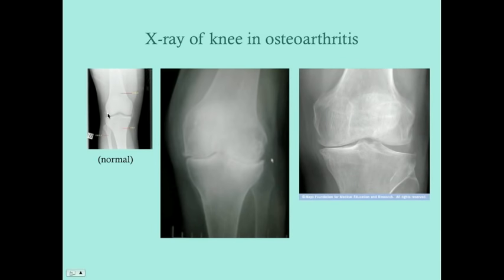On the distal interphalangeals, there is definite narrowing of the joint space on X-ray. Looking at what these patients' hands may look like externally: Heberden's nodes are visible on the distal interphalangeals — you can see them on nearly each finger, particularly the right third, fourth, and fifth digits. Bouchard's nodes are present on the proximal interphalangeals, and Heberden's nodes are also visible alongside them.